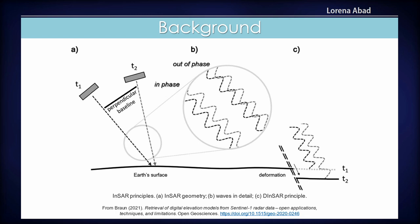If there is any change between point 1 and point 2, we get information about changes that are happening. An example is volcanic activity — checking how much difference there has been before and after, how much it moved, or earthquakes. But for our purpose of generating digital elevation models and topographic data, this is the situation we don't want. We want point 1 and point 2 to be stable enough to get elevation information, so we want the time between the two passes to be as small as possible so that information is not changing much.